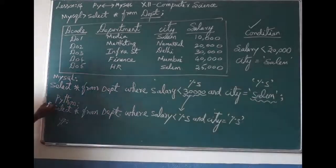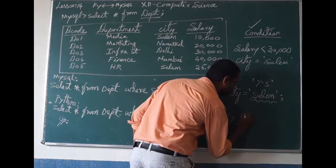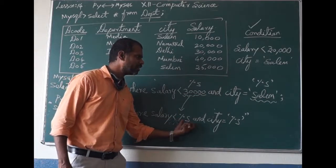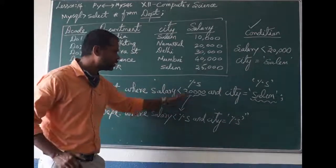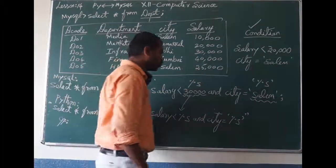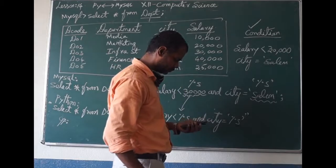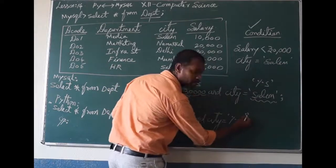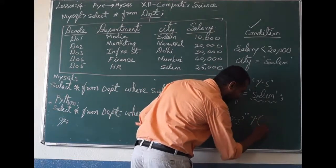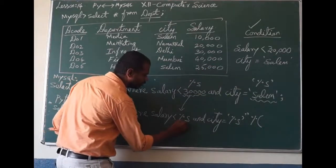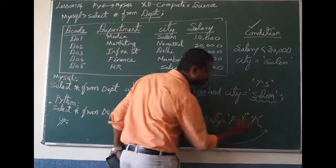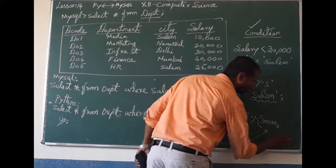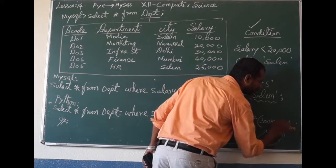Here we started the double quotes, so the whole SQL string is inside double quotes. We didn't enter 30,000 or Salem inside the string. Those are mentioned at the end. After the closing double quote, you have to give one % sign, then brackets. Inside the brackets, write the actual data: 30,000 comma, then 'Salem'. Then close the bracket.